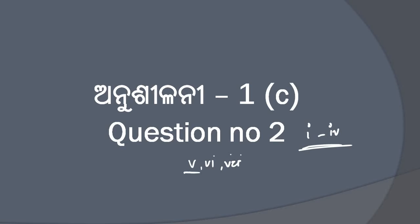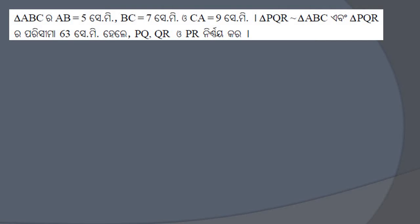Let's see which bit number 5 is. In bit number 5, we are given a triangle A, B, C where AB is 5cm, BC is 7cm, and CA is 9cm. Triangle PQR is similar to triangle ABC, and the perimeter of triangle PQR is 63cm. We need to determine the values of PQ, QR, and PR.